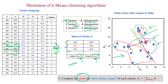Another stopping criterion is that cluster members should not move from one group to another group. If nothing changes, we stop the algorithm. Otherwise, if after getting the new cluster centers there is any possibility of a data point moving to another cluster, we increase the iterations. If cluster members are not moving between clusters and cluster centers are not changing, then we can stop the algorithm.